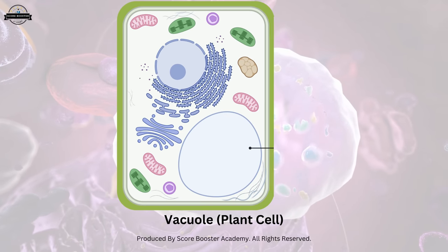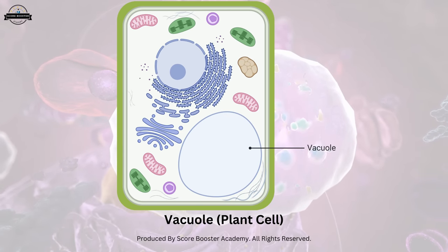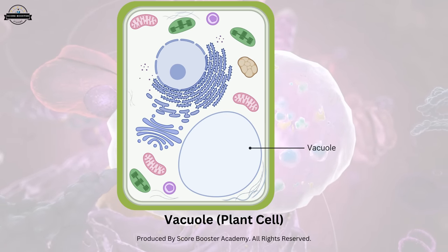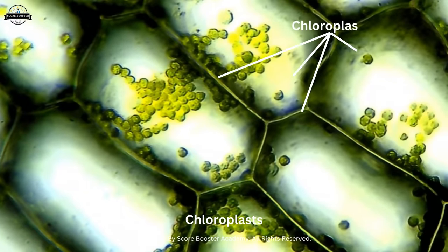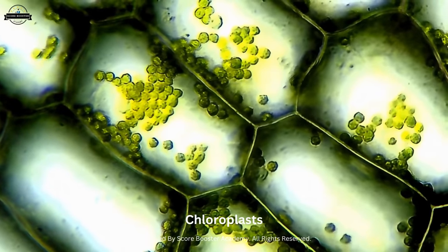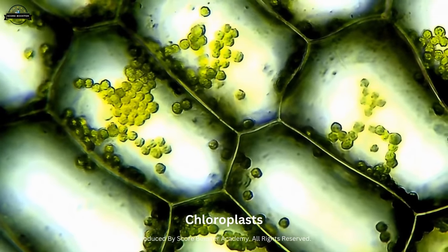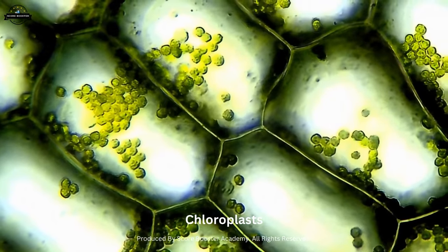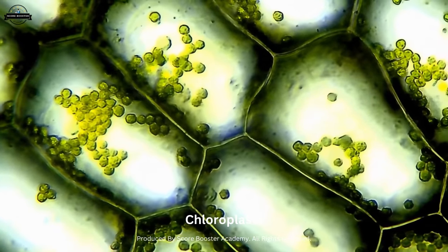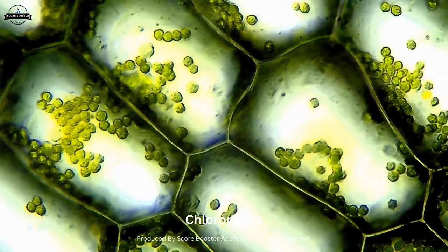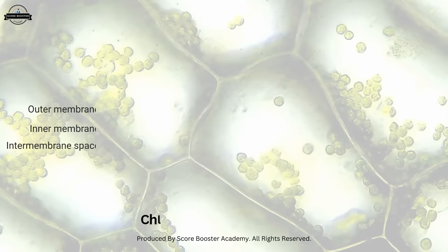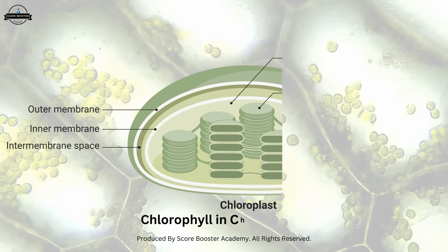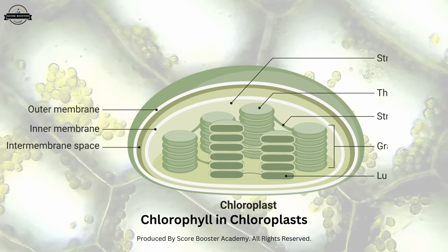Chloroplasts are unique to plant cells and some protists. They are responsible for photosynthesis — the process by which plants convert sunlight, carbon dioxide, and water into glucose, releasing oxygen as a byproduct. Chloroplasts contain chlorophyll, a pigment that captures light energy.